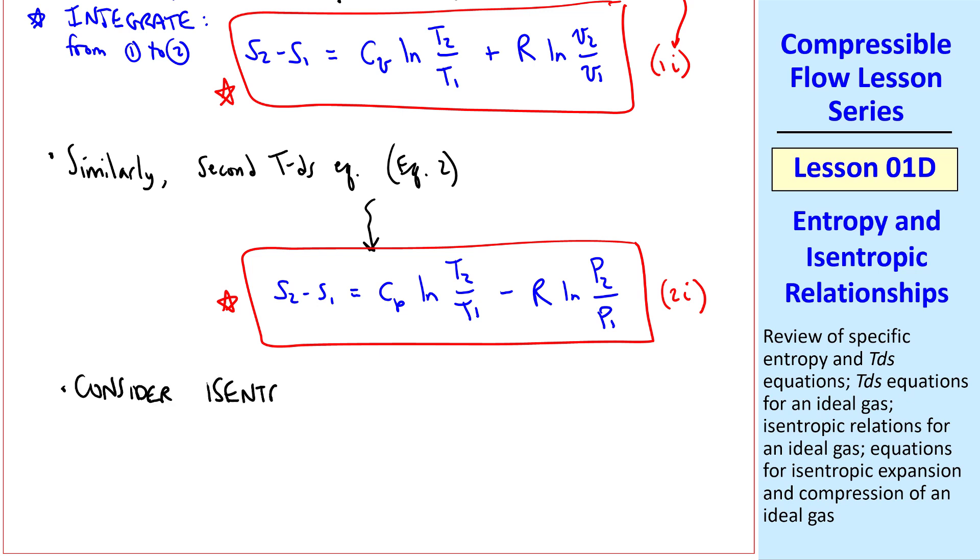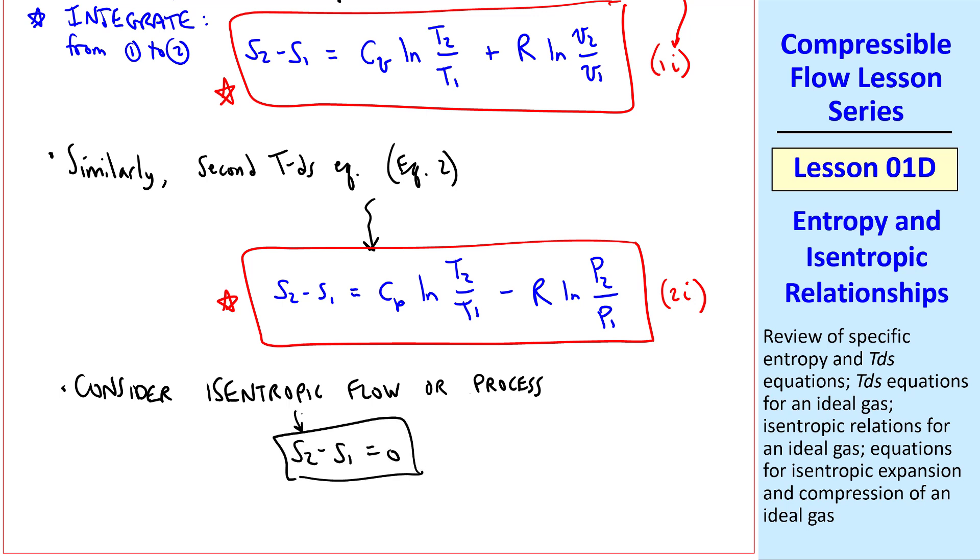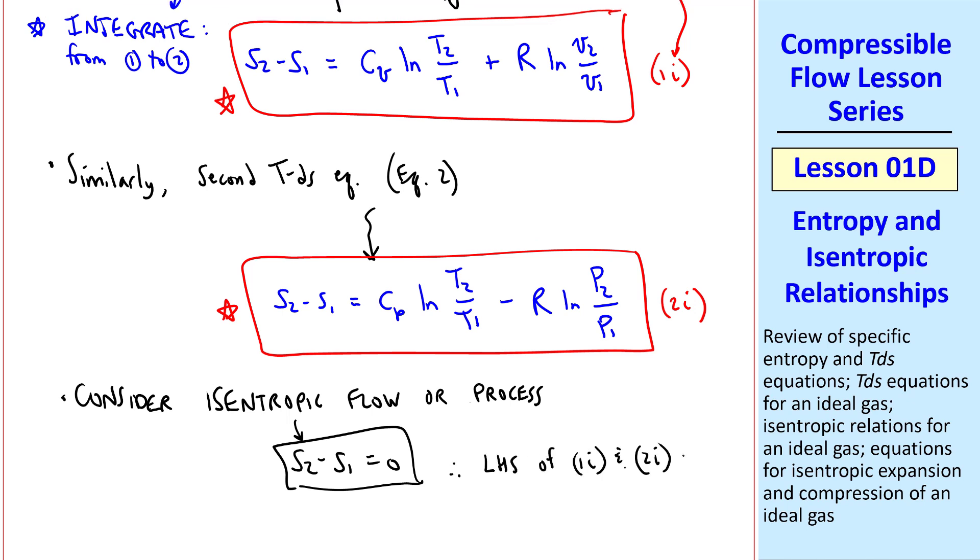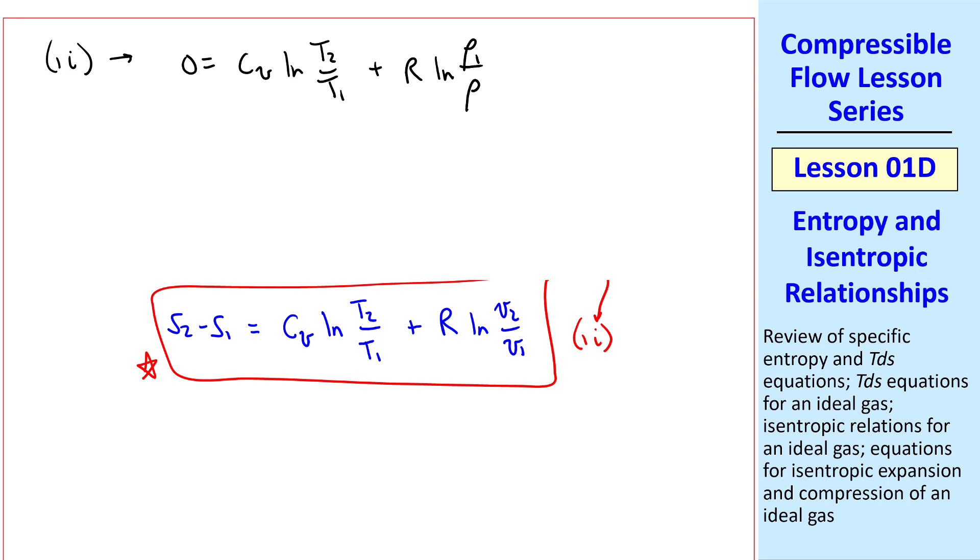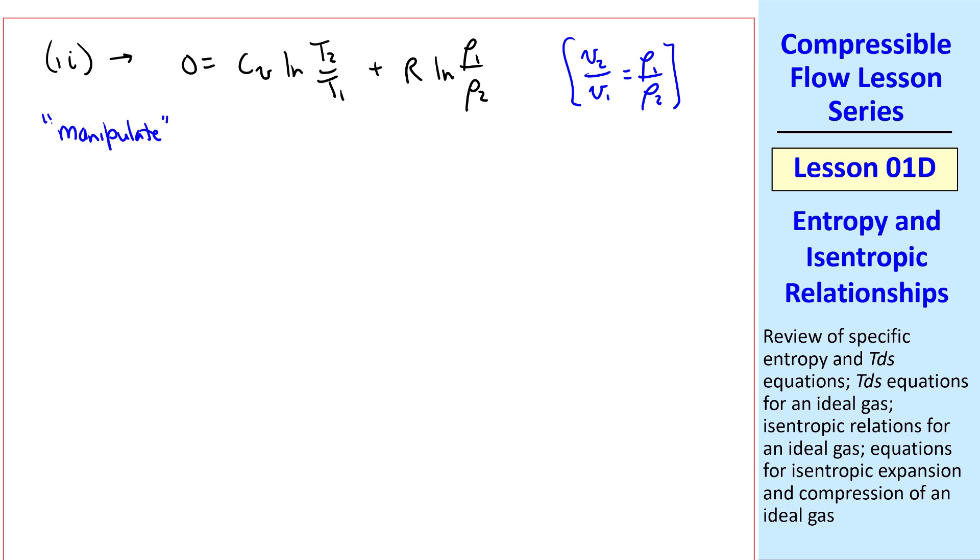Now let's consider isentropic flow, or a process. In thermal we often talk about processes, but in this course we'll be talking about flows. Either way, s2 minus s1 is 0, by the definition of isentropic, and therefore the left hand side of 1i and 2i go to 0. Equation 1i then becomes 0 equals cv natural log of t2 over t1, plus r natural log of rho 1 over rho 2, where I've used the fact that v2 over v1 is rho 1 over rho 2. In other words, they're inversely related.